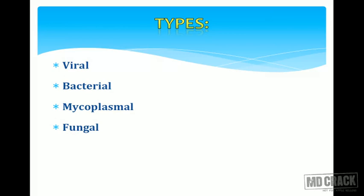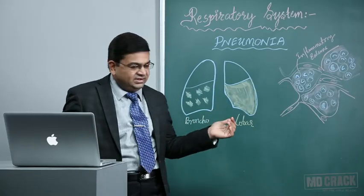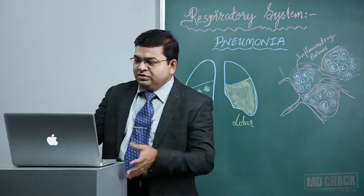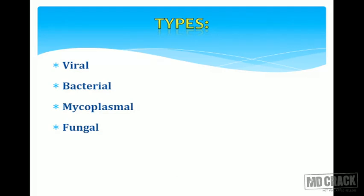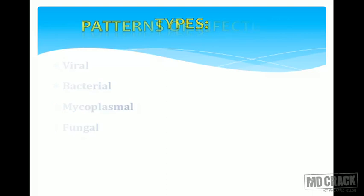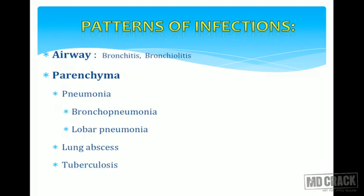Pneumonias have been classified in a variety of ways — depending on the causative agents, critical factors, and the pattern of infections. They can be viral pneumonias, bacterial pneumonias, mycoplasma pneumonias, or fungal pneumonias. Depending on the pattern of infections: if only the upper airways get infected, we call it bronchitis or bronchiolitis. If the lung parenchyma proper gets infected, then only we call it pneumonia.